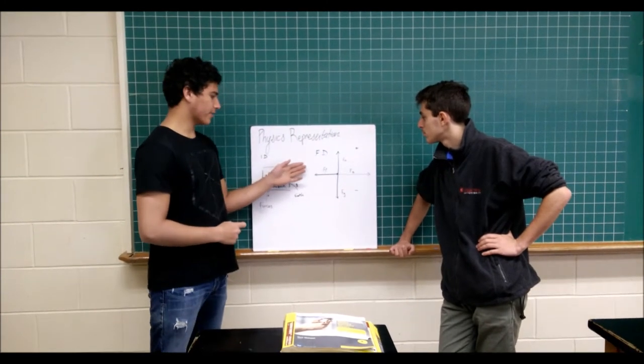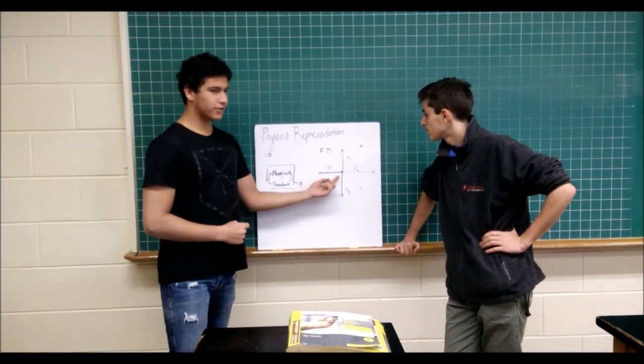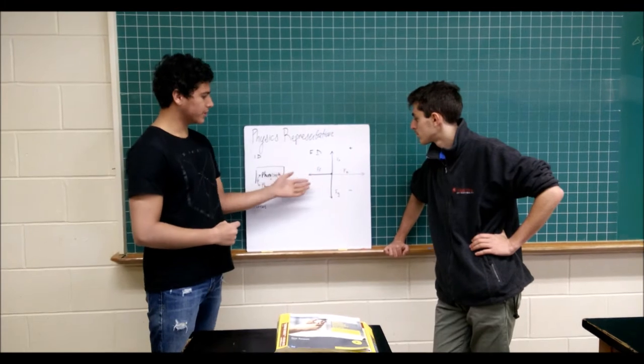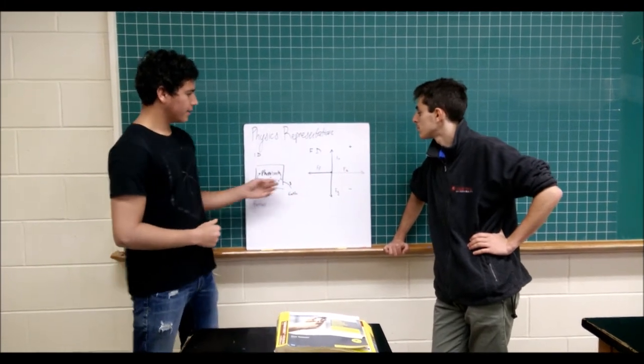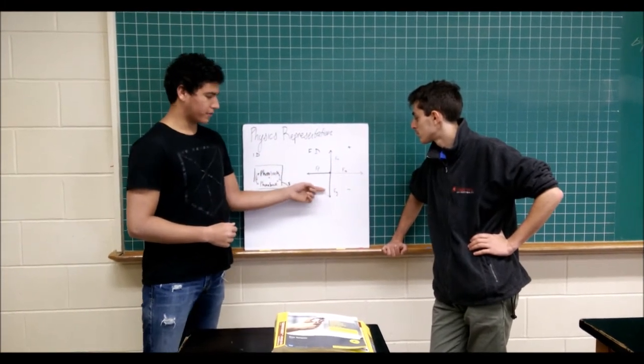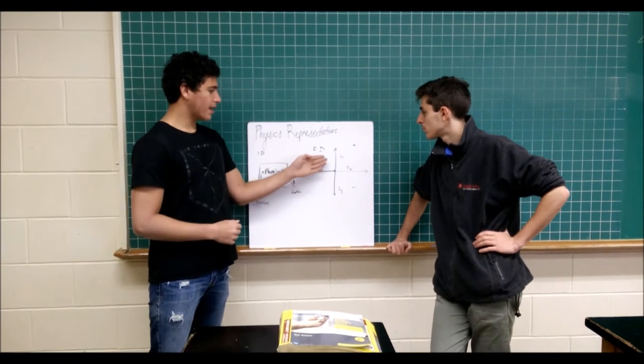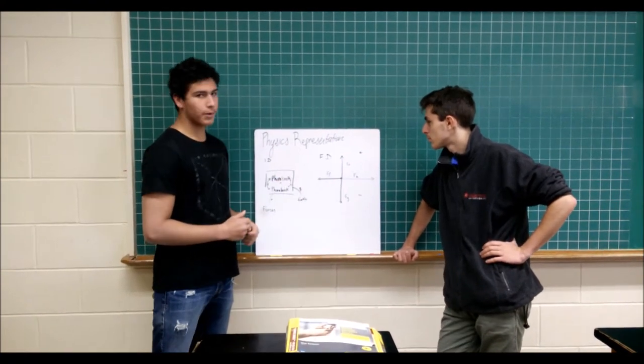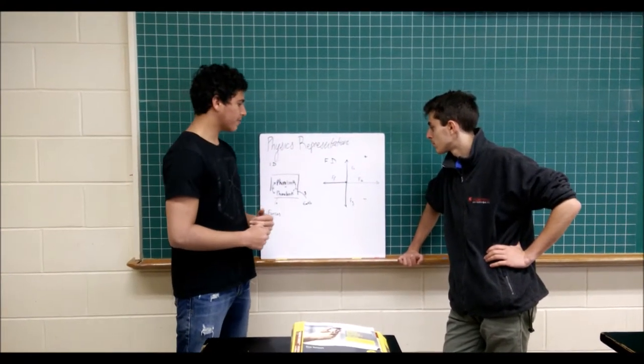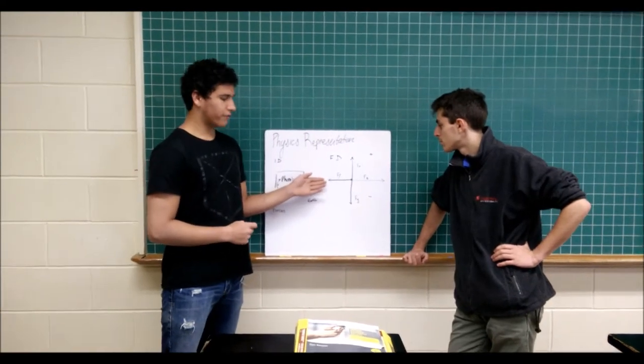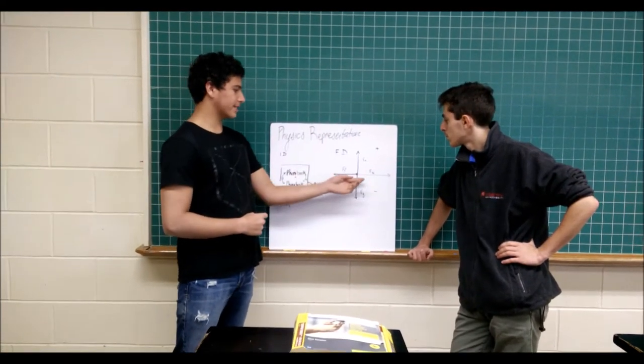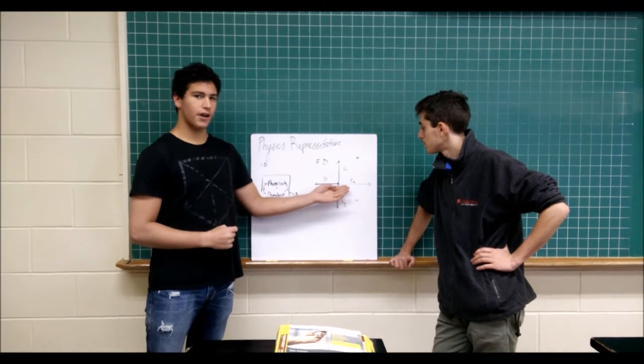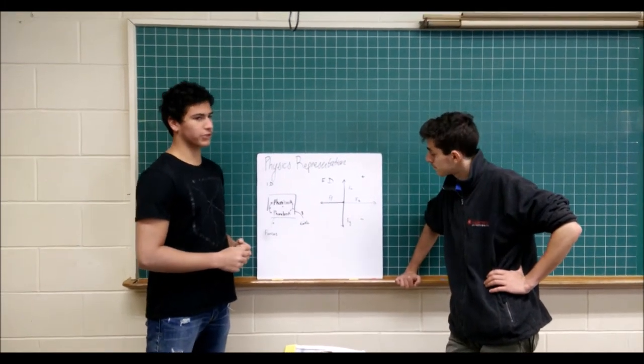Over here we have a force diagram, and this in the center is the two phone books, and over here we see all the forces acting upon them. So over here we have gravity from the earth pushing the phone books down, and we have the normal force pushing them up, which is the two people holding them. Over here we have the friction force, which is counteracting the applied force of the two forces pulling the phone books apart.